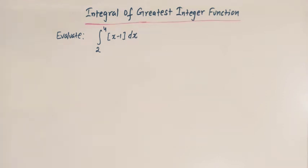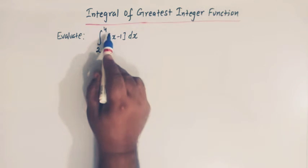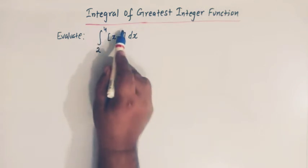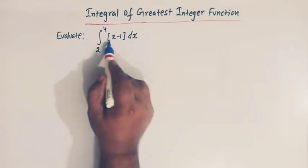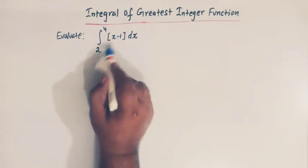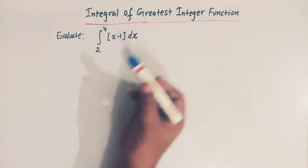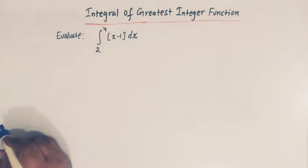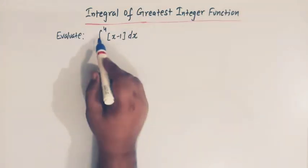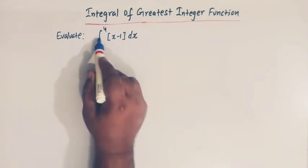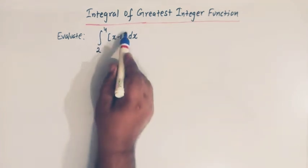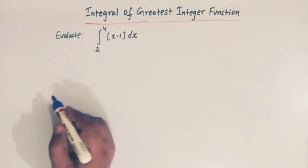Hello viewers. In today's class we are going to solve one important problem from the greatest integer function. We have to integrate the greatest integer function ⌊x − 1⌋ from 2 to 4. Let us find out the value of this definite integral involving the greatest integer function.